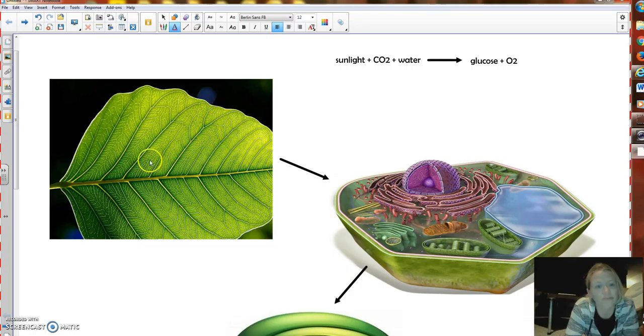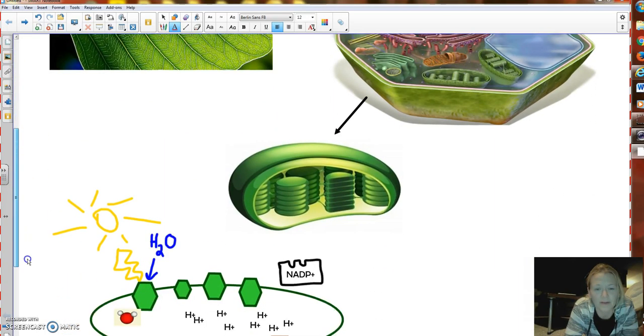Sunlight's coming down, it gets all the way through that leaf into a plant cell. So here's our plant cell. Here's our nucleus, endoplasmic reticulum, vacuole, but here are the chloroplasts. So we're going to hone in on these chloroplasts right here. There's one right there.